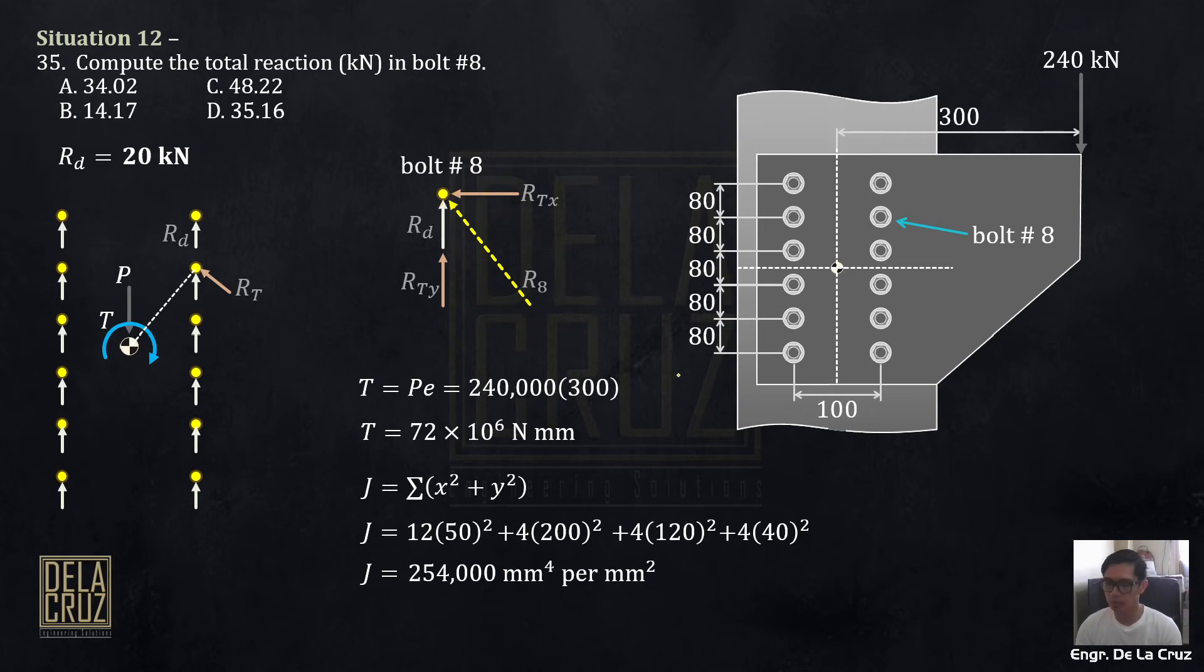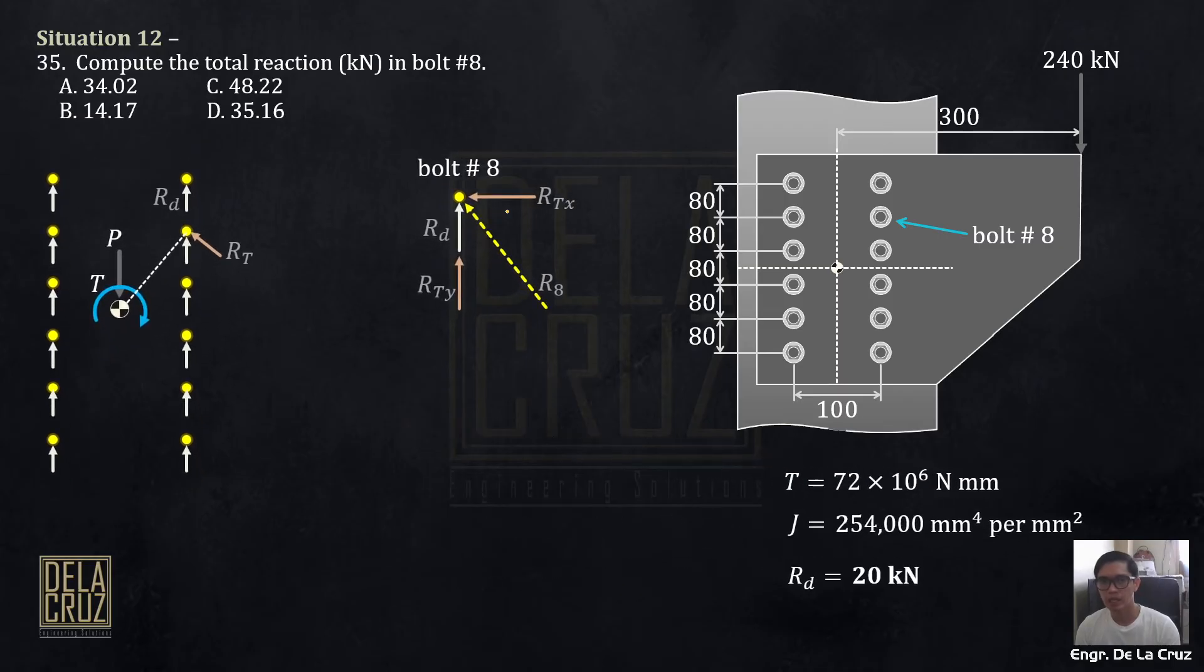How to get the reaction there? Let's get RTX and RTY. We do have RD. We have RD in the first part. So, to solve for that, this is our formula. RTX is TY over J. Okay? Why TY sir? Why Y? This is X. Because if this is our RTX, the meaning of Y there is its moment arm about the centroid. This is our Y. So if it's X, your moment arm should be Y. So, our T, this is our Y for this. Okay? So, 120 from here to here. Our T is this. We have the Y and the polar moment of inertia. 254,000. We get RTX.